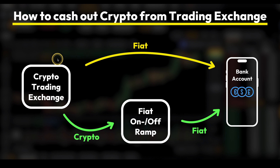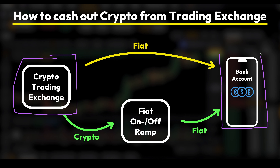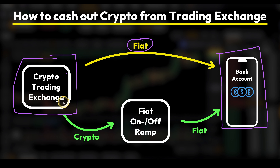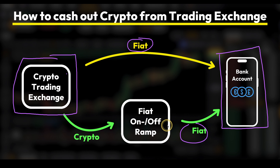When withdrawing money from a crypto trading exchange back to our bank account we basically have two different options. Either we withdraw the fiat money — so euro or US dollar — directly from the exchange to our bank account, but unfortunately that is not always possible. The other way would be to first send crypto from that exchange to a so-called fiat on and off-ramp, which is basically an exchange optimized for interacting with fiat money with your own bank account. So we first send crypto there, convert it to fiat, and then send fiat from there back to our bank account.